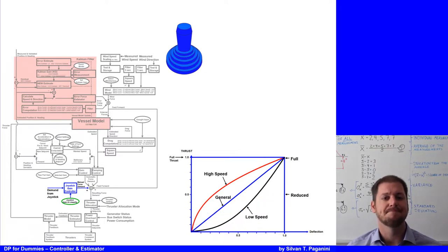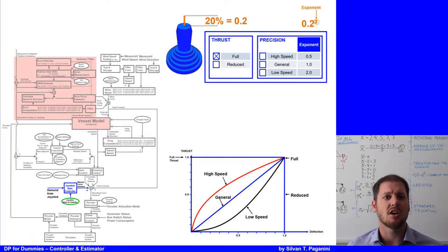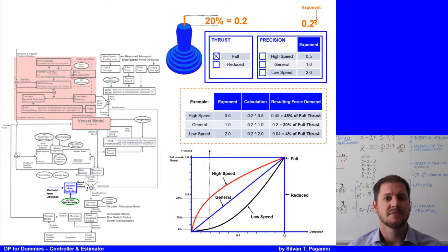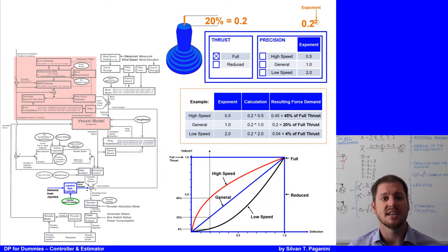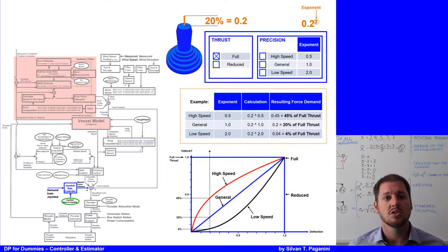Let's make an example. If in full thrust mode the joystick is pushed 20% ahead, the DP system uses exponents to calculate the force. For high speed, the exponent is 0.5; for general, it is 1; and for low speed, it is 2. Pushing the lever 20% ahead with high speed gives 0.2^0.5 = 0.45, meaning 45% of available thrust. With general, it is linear at 20%. With low speed, 0.2^2 = 0.04, meaning only 4% of available thrust is used.